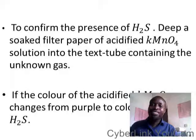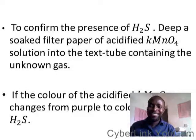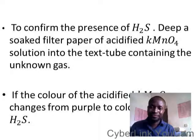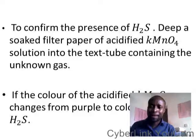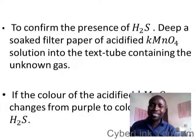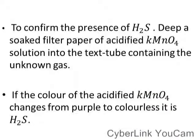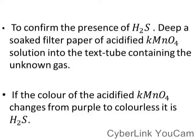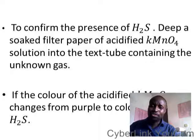To confirm the presence of hydrogen sulfide, soak that filter paper and put it inside potassium iodide solution, then place it inside the container that contains the unknown gas. If the color of the potassium iodide paper changes, that confirms the presence of hydrogen sulfide.